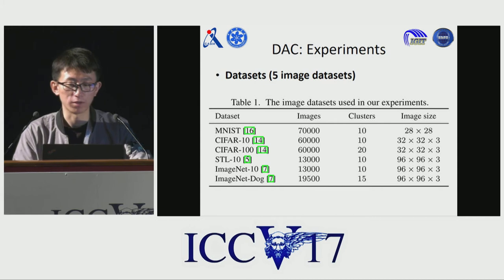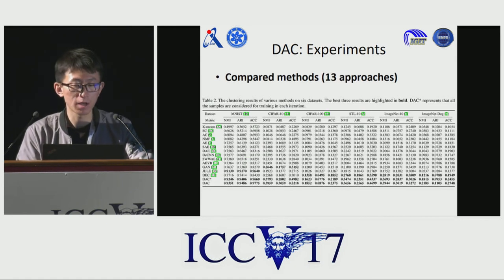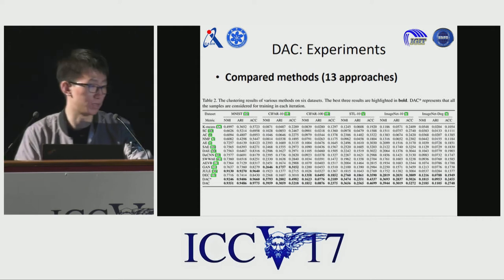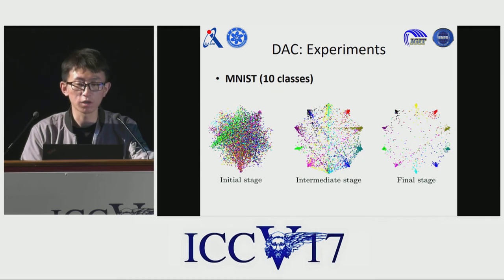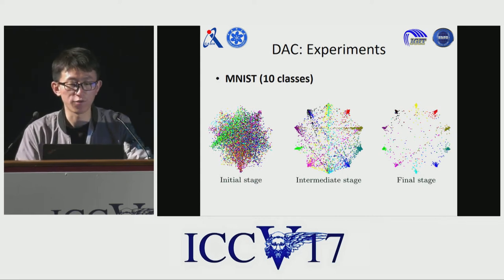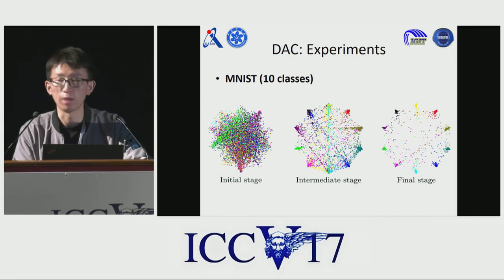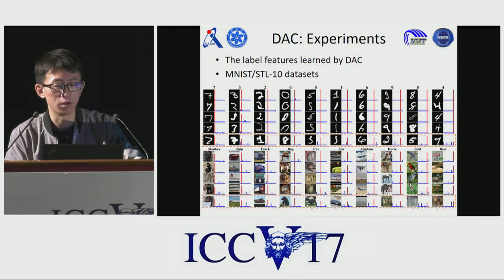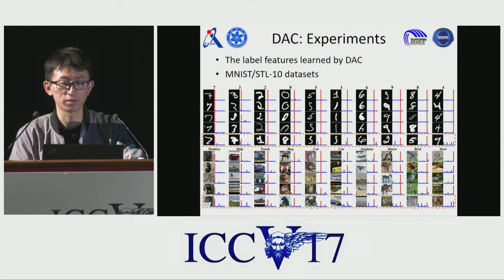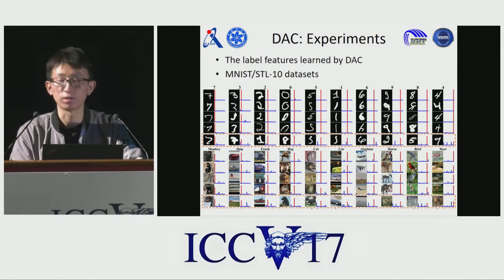We perform experiments on five popular image datasets, including MNIST, CIFAR-10, CIFAR-100, STL-10, and ImageNet. We report the clustering results of different methods. Note that DAC dramatically outperforms the other methods with significant margins. The clustering result on the MNIST test set is reported here. We map the learned label features into the two-dimensional space. The figure shows that similar samples are gradually clustered together, and dissimilar samples are mapped into different label features. We also analyze the label features learned by DAC on MNIST and STL-10, and observe that the same neurons are activated in the label features if images belong to the same cluster. This means our model can learn high-level features rather than simple combinations of various features.